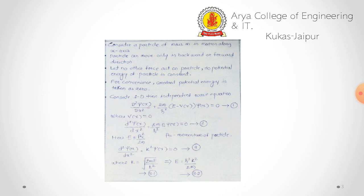Since V(x) = 0, the modified equation becomes d²ψ(x)/dx² + (2mE/ħ²)ψ(x) = 0. The energy can also be written as E = px²/2m, where px is the momentum of the particle along the x axis. The term 2mE/ħ² is a constant and can be replaced as k², giving: d²ψ(x)/dx² + k²ψ(x) = 0.